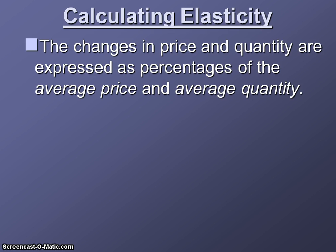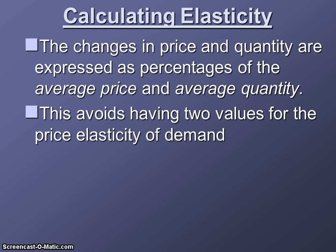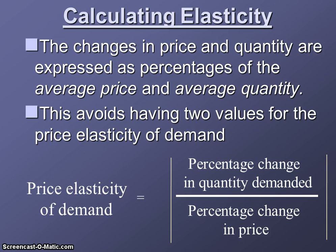When calculating elasticity, we use the midpoint method. The changes in price and quantity are expressed as percentages of the average price and average quantity, which avoids having two values for the price elasticity of demand. The general formula is: price elasticity of demand equals the percentage change in quantity demanded divided by the percentage change in price, and we take the absolute value of the answer, dropping any negative sign.